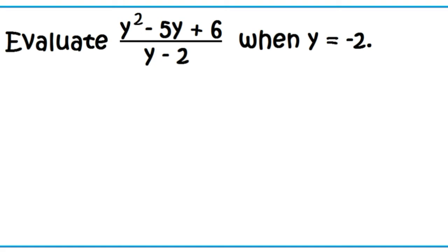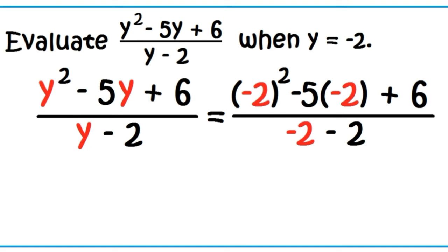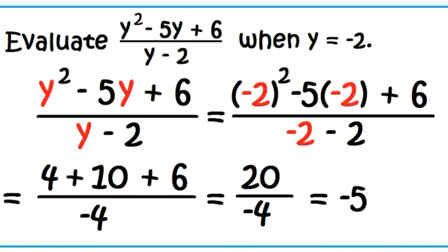Evaluate the quantity Y squared minus 5Y plus 6 divided by the quantity Y minus 2 when Y equals negative 2. Substitute negative 2 for Y, then perform the indicated operations. The square of negative 2 is 4. 5 times negative 2 is negative 10. The opposite of negative 10 is positive 10. Negative 2 minus 2 is negative 4. 4 plus 10 plus 6 is 20. Divided by negative 4 is equal to negative 5.